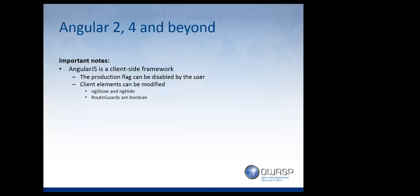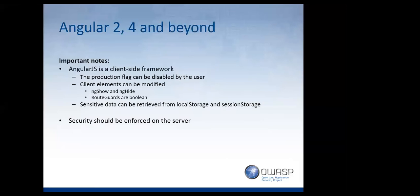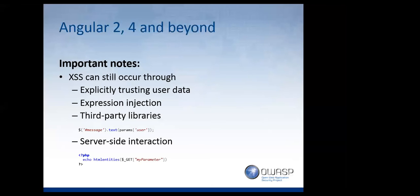Client elements can still be modified — if you have ng-show and ng-hide or route guards which are boolean, you can just satisfy their conditions and access things you shouldn't be able to see. Sensitive data can be retrieved from local storage and session storage, so store as little as possible and prefer session storage because it gets removed — local storage is persistent. Security should always be enforced on the server: access control, authentication, authorization, input validation, escaping, encoding, and sanitization — this eliminates server-side issues like SQL injection. Access can still occur through explicitly trusted user data treated as expressions, there's still expression injection, and third-party library issues remain.